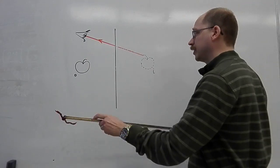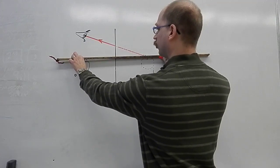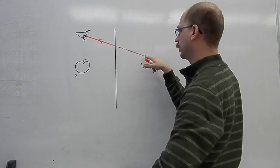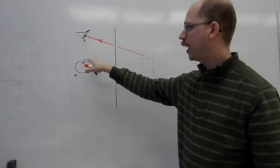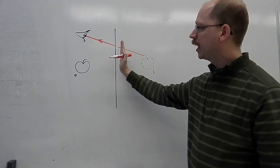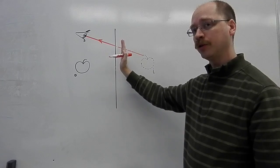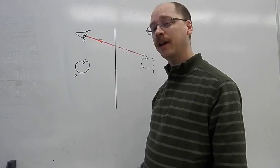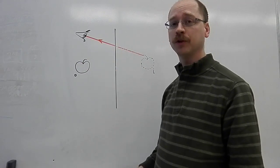A common error that I see students make is they try to draw a ray straight across like this from the object to the image and then it bounces up. You have to remember if a ray actually went from the object straight across, hit the mirror perpendicular to its surface, kind of like along the normal line, it would bounce straight back the way it came. It wouldn't be going up to the person's eye.